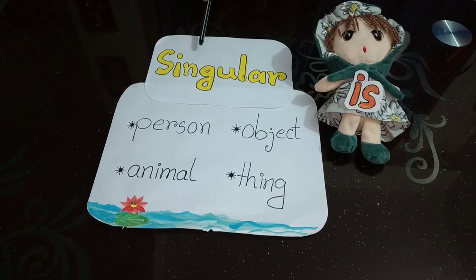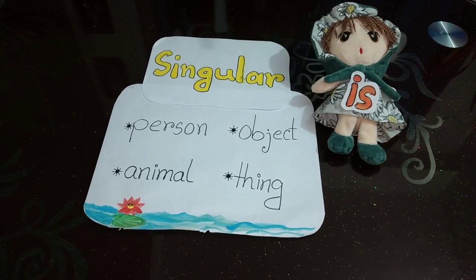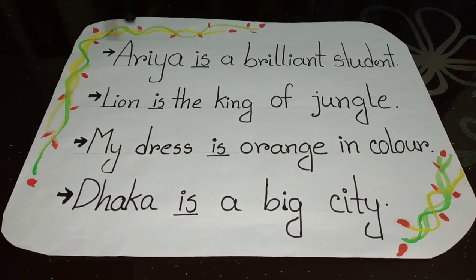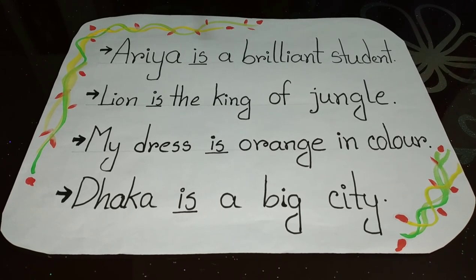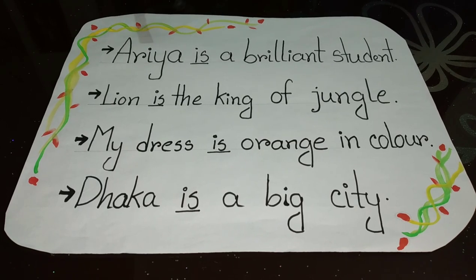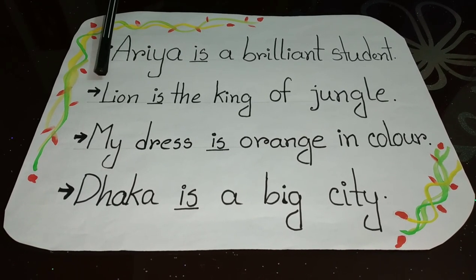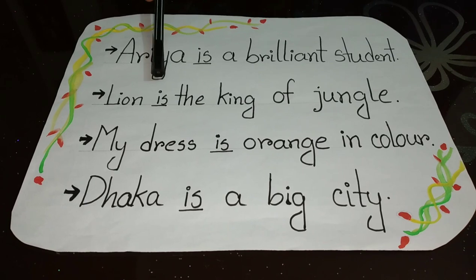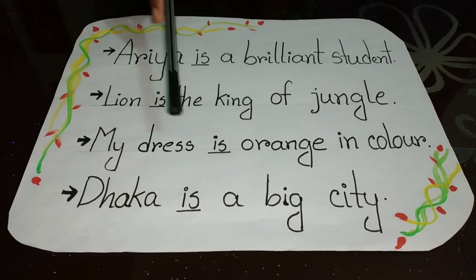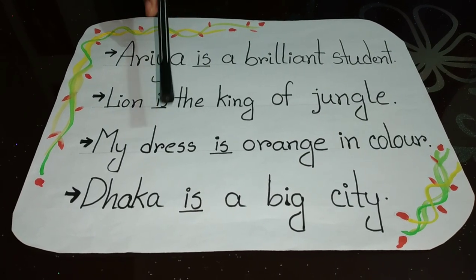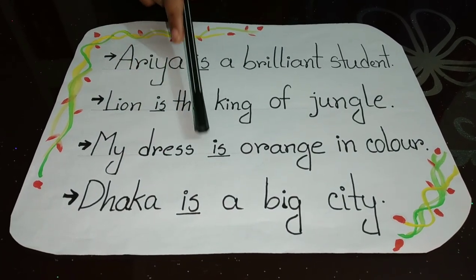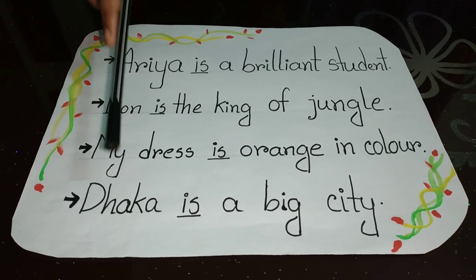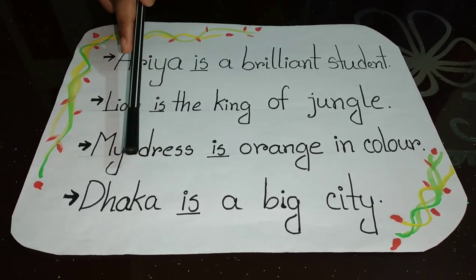Is likes to hang around with singular objects. So it has a great bonding with all singular persons, objects, animals, or things. For example: Aria is a brilliant student — here Aria is a single person, so Is will sit after Aria. Lion is the king of the jungle — Lion is a single animal, so Is will sit after Lion. My dress is orange in color — dress is a single thing, so Is will sit after dress. Dhaka is a big city — Dhaka is a single object, so Is will sit after Dhaka.